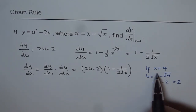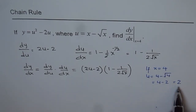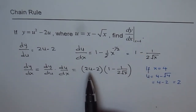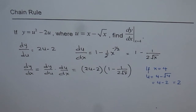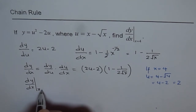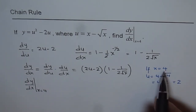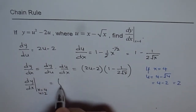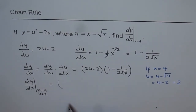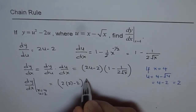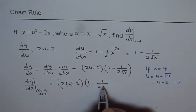Now we know that at x equals 4, u equals 2. So we can find dy/dx at x equals 4 without expanding in terms of x. We substitute u equals 2 and x equals 4 into the chain rule expression: (2 times 2 minus 2) times (1 minus 1 over 2 times the square root of 4).